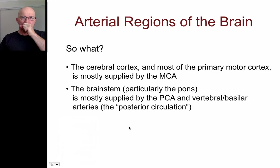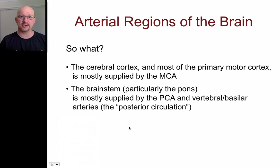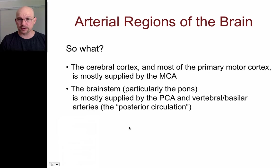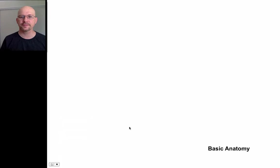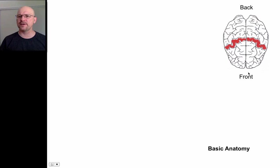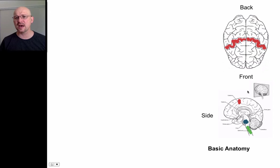Why do we care about where the arteries feed? The cerebral cortex and most of the primary motor cortex are mostly supplied by the middle cerebral artery. The brainstem, particularly the pons — remember the pontine arteries — is mostly supplied by the posterior cerebral artery and the vertebral basilar artery. Together, the vertebral basilar and posterior cerebral artery are called the posterior circulation. Let's review the basic anatomy: looking down from the top, here's the front and back of the brain, and I've highlighted the primary motor cortex.